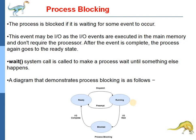Next, process blocking, meaning a process is in the waiting state. The processor is blocked if it is waiting for some event to occur. For example, it may be an IO event executed in the main memory and does not require the processor. After the event is complete, the process again goes to the ready state. This diagram shows that once a process moves from ready state to running, if the process wants any IO event, it changes its state from running to blocked or waiting state. Once all IO events are completed, those processes are moved back into ready state.